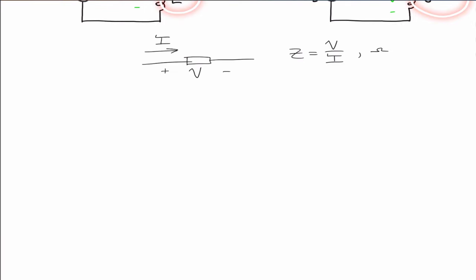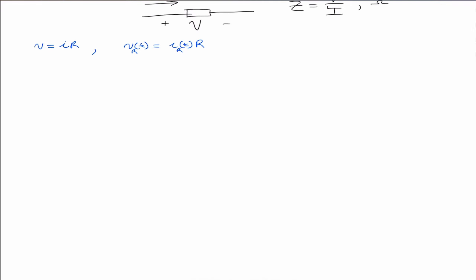So we can go ahead and start with the resistor. The VI relationship for a resistor is V equal to I times R. In the time domain we have V(t) equal to I(t) times R, where V_R indicates the voltage across the resistor equals the current through the resistor times R.